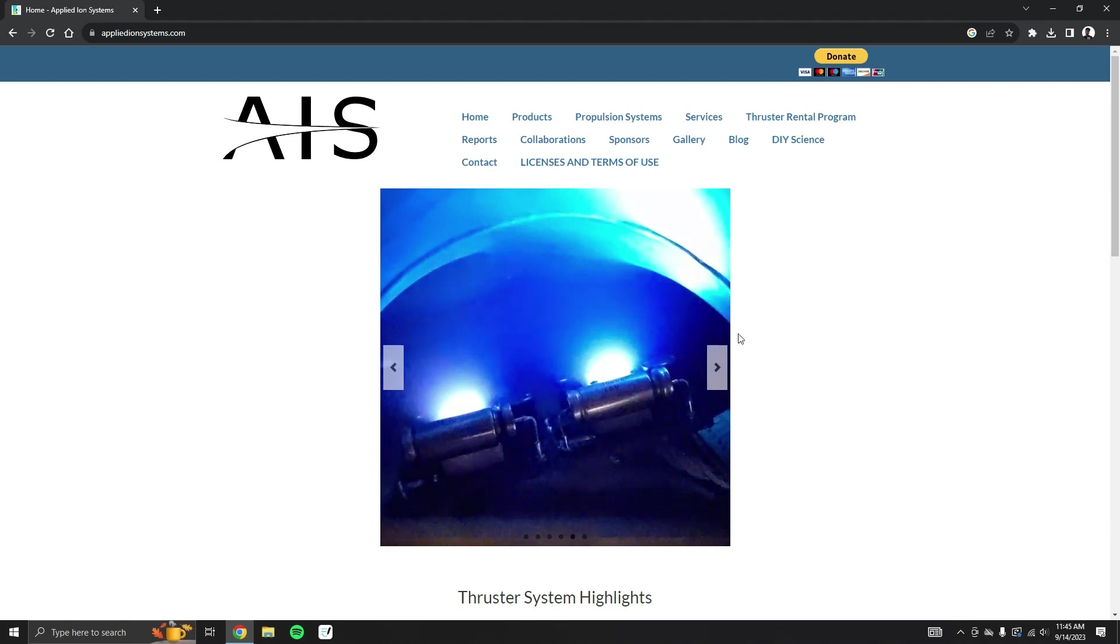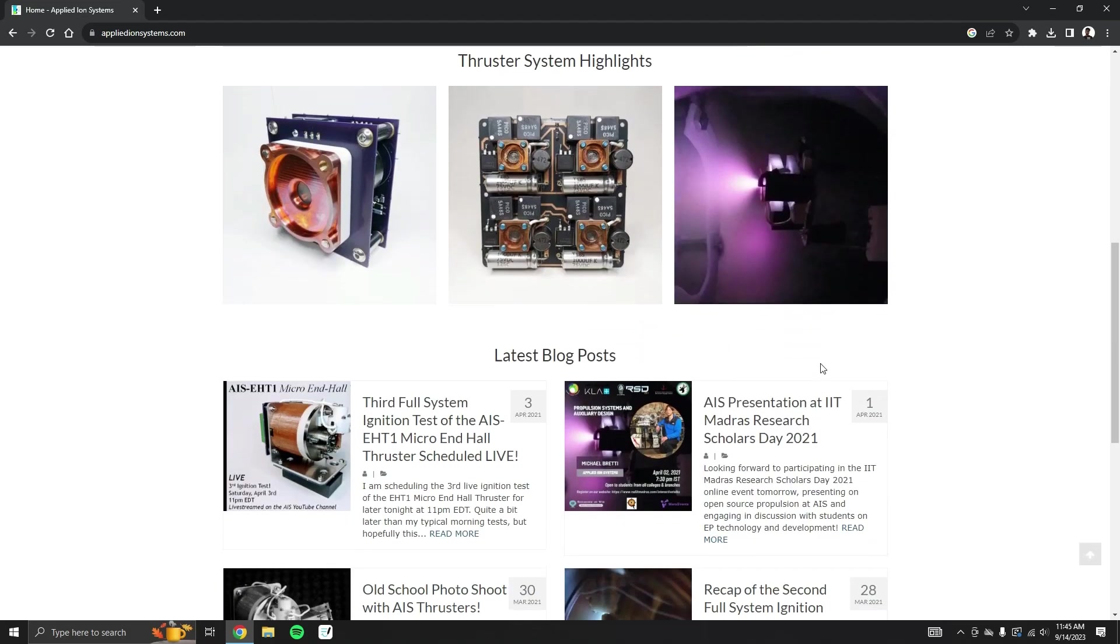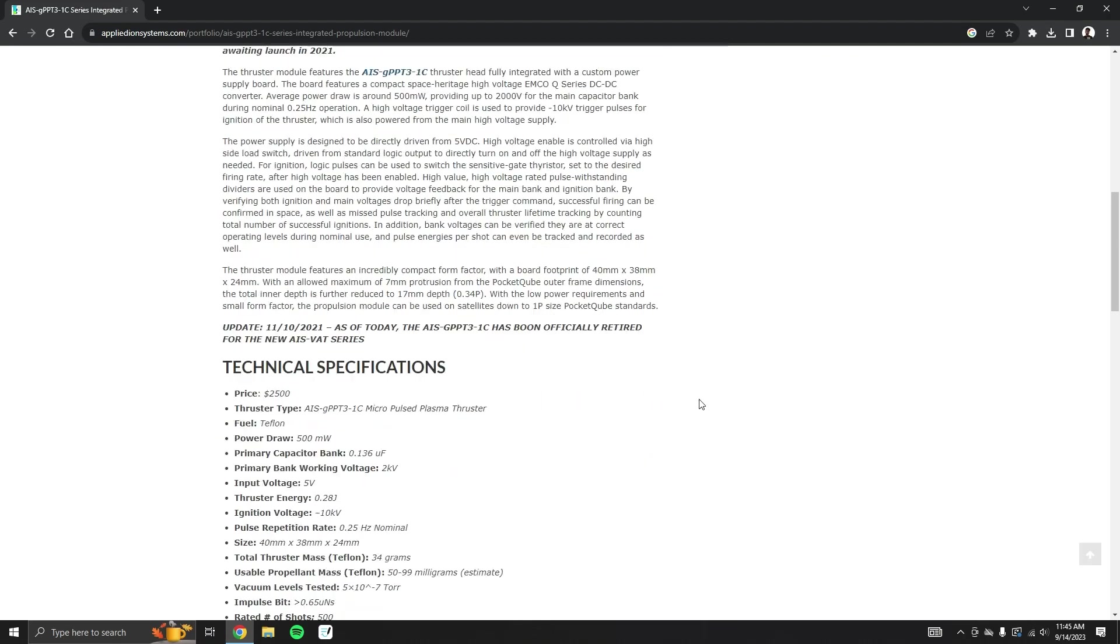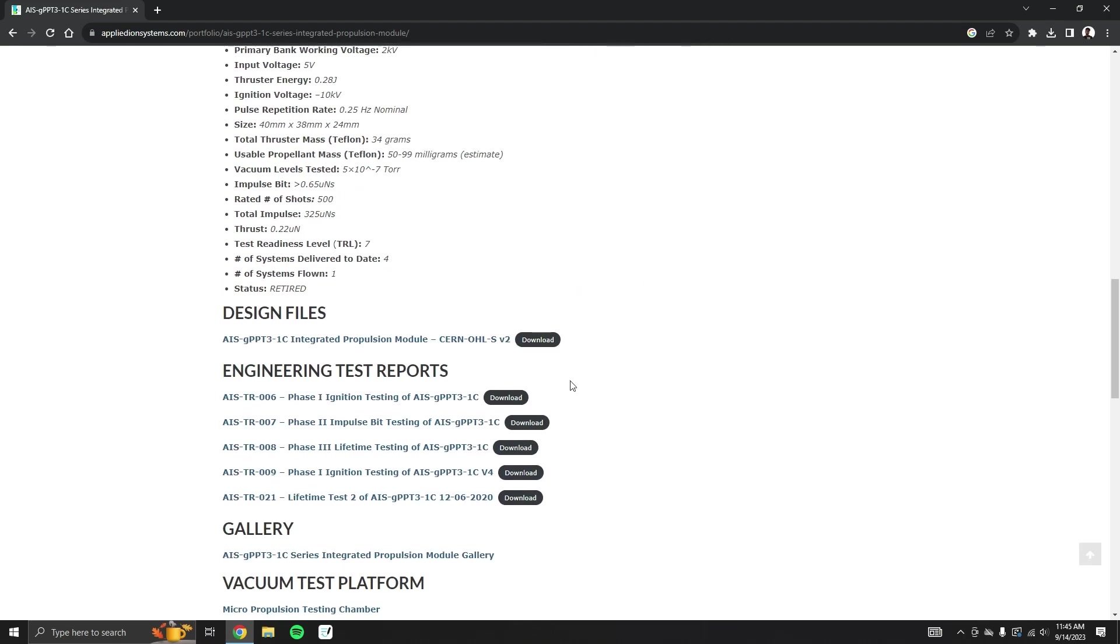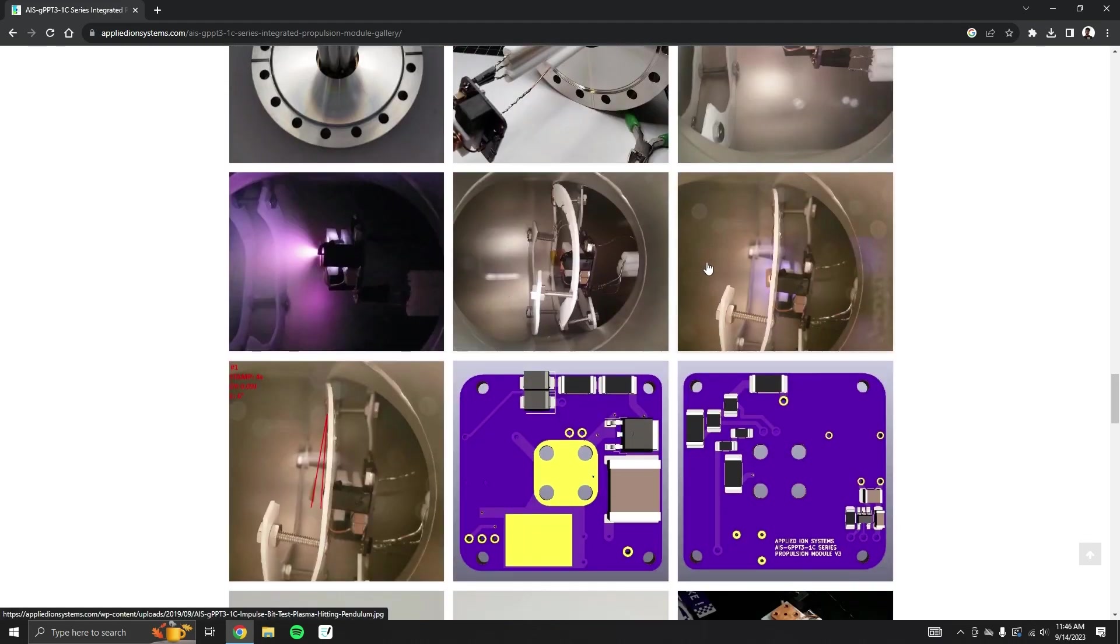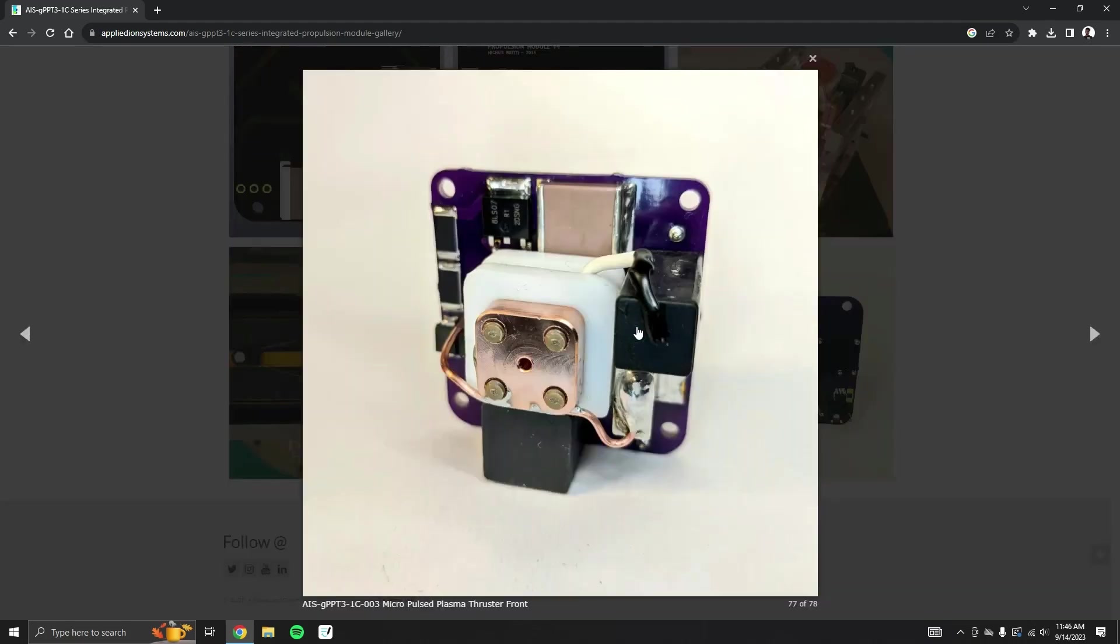While researching pulsed plasma thrusters, we stumbled upon Applied Ion Systems. Their website documents Michael Brady's impressive work on electric thrusters. What sets it apart is the open source access it offers to design files and comprehensive performance reports. If you take a look at their gallery, one can also find the schematics of the circuits used. Keeping this design as reference, we got to work.